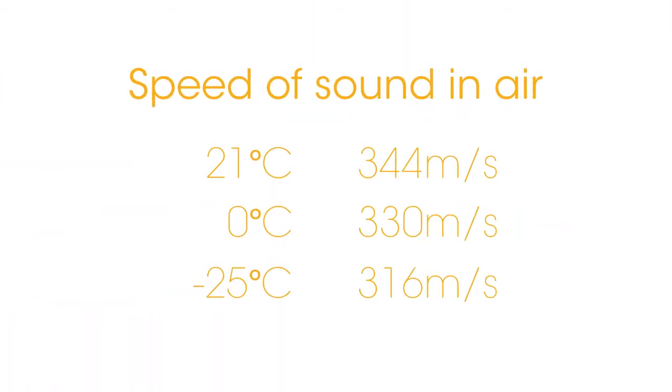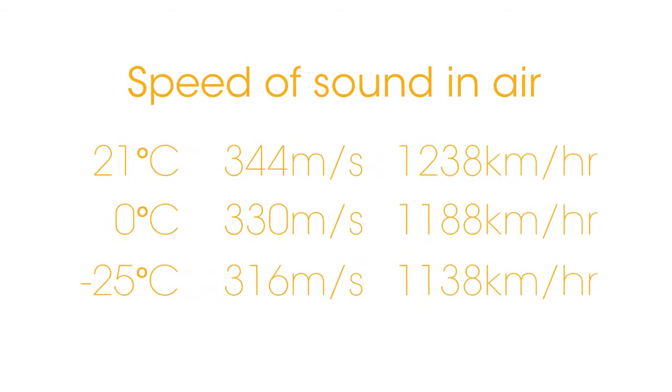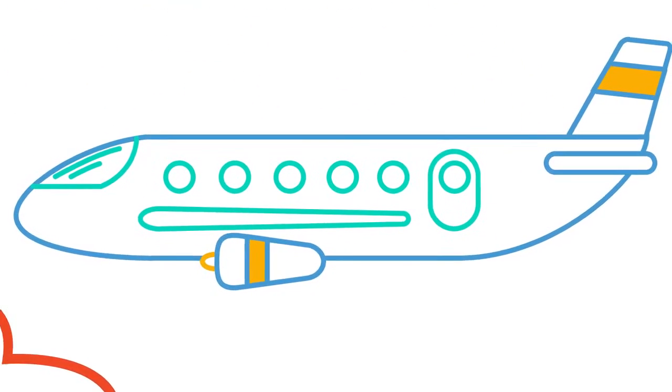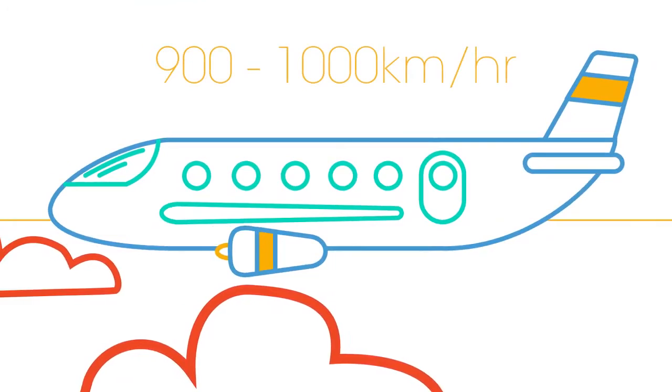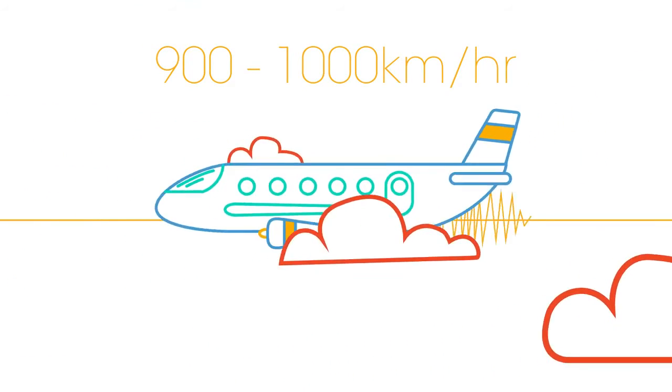This is a rough approximation for the speed of sound if the air temperature is 0 degrees Celsius. If the air is warmer, sound travels faster. Let's add in kilometres per hour to give better context. Passenger planes fly about 900 to 1,000 kilometres per hour, slower than the speed of sound.